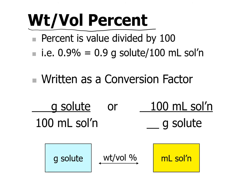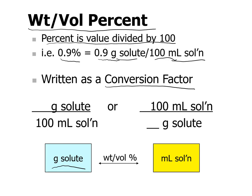Weight by volume percent is a fraction, so we can use it as a conversion factor. Percent means the number divided by 100, so weight by volume percent means grams of solute divided by milliliters of solution. Our 0.9% weight by volume solution has 0.9 grams of solute per 100 milliliters of solution. We can use that to convert grams of solute to milliliters of solution, or vice versa.